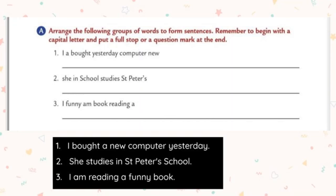Let's do an exercise related to subject and predicate. Circle the subject and underline the predicate in the following sentences. First: 'Sea water is not fit for drinking.' What is not fit for drinking? Sea water — so sea water is the subject; circle it. 'Is not fit for drinking' is the predicate; underline it.